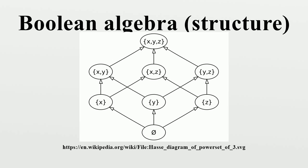A Boolean algebra is a six-tuple consisting of a set A, equipped with two binary operations, a unary operation and two elements 0 and 1, such that for all elements a, b and c of A, the following axioms hold.